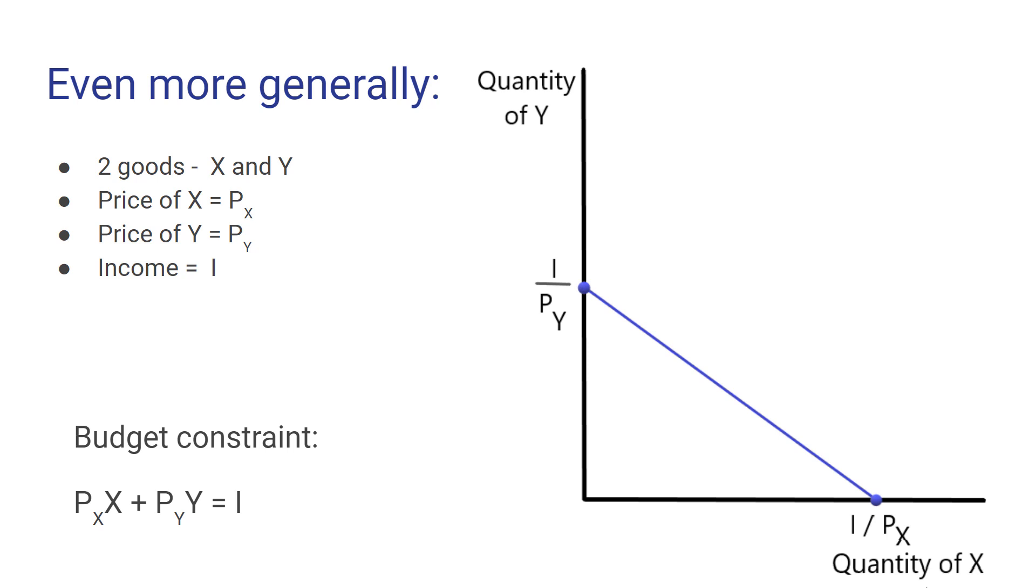If all the spending is devoted to buying good X, then the total amount that could be purchased would equal income divided by the price of X. And all the points in between represent different combinations of X and Y that this individual can buy given these prices and given this level of income.